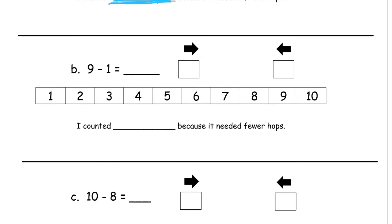Nine minus one — these numbers are far apart, so it's going to be easier to count backwards one step from 9 than to count from 1 all the way up to 9. So it's easier to go back. I counted back and landed on 8. I counted back because it needed fewer hops.